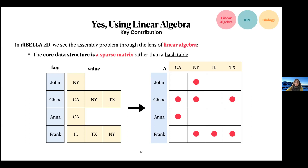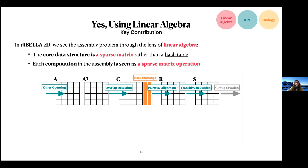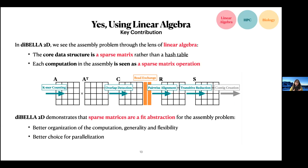By doing this, we can represent each step of the assembly pipeline as a computation between sparse matrices. This has two main advantages. First, we get better organization of the computation and generality — it's easy to change the data structure of the non-zeros and the operations applied between matrices. Second, it's a better choice for parallelism, because the HPC community has been studying matrix multiplication for many years.